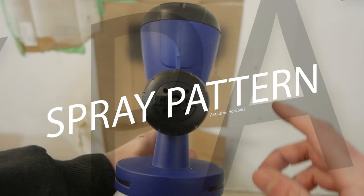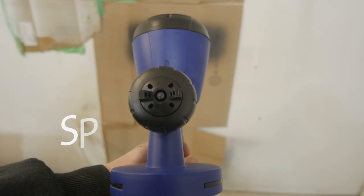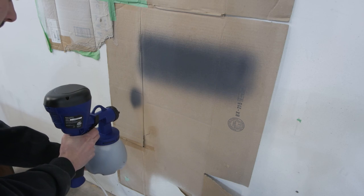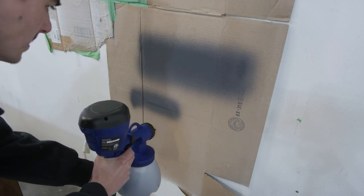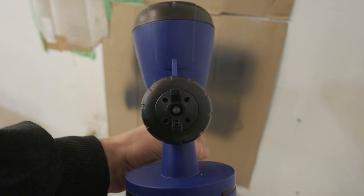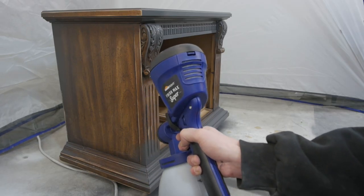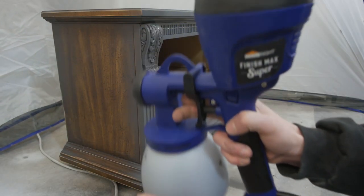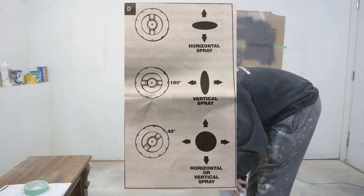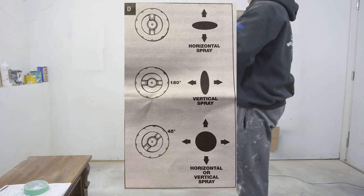To quickly explain the spray patterns, this is a horizontal setting which sprays a vertical spray, and this is great for going back and forth the project. And this is the vertical setting that shoots a horizontal spray, which is perfect for going up and down a project. And here's the photo from the manual of the spray patterns, just you can pause and take a look just to get a better understanding.